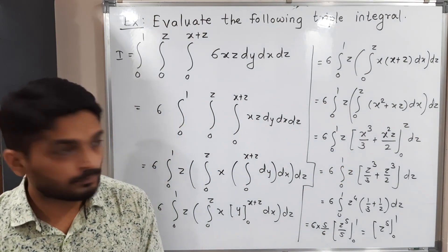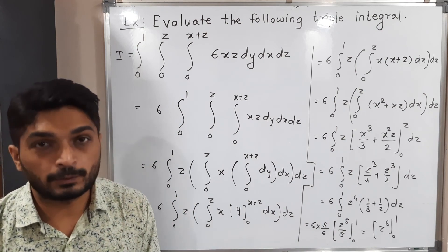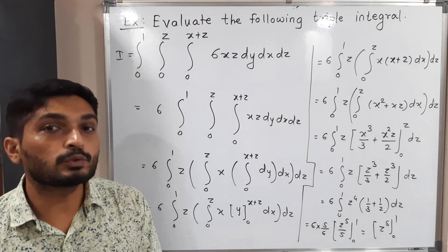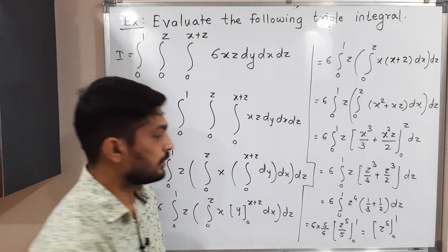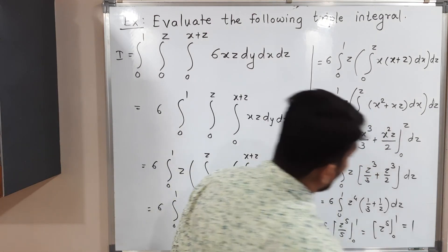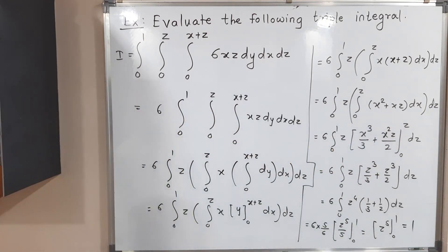Applying the limits: putting the upper limit gives 1 to the power 5, which is 1; putting the lower limit gives 0 to the power 5, which is 0. So the final answer is 1. That is the required answer.